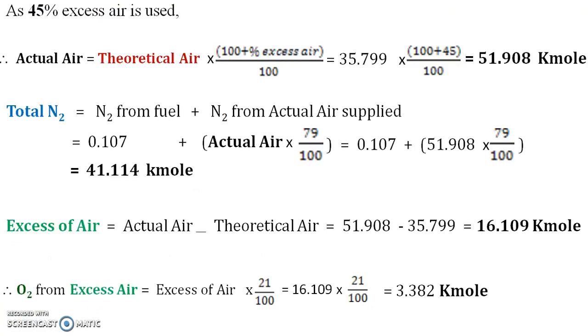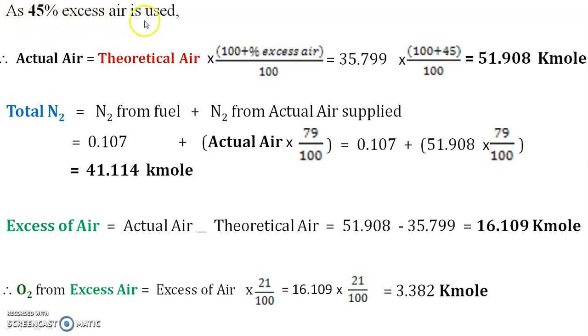This completes the 4-mark section. Now we move to fuel gas determination — that is, the product determination. For that, we have to consider the excess air provided, which in this numerical is 45% excess air.